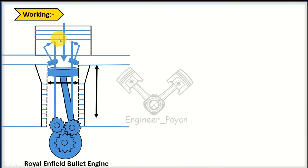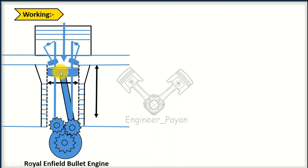First of all, we have a V-shaped bullet engine structure. We have an air-fuel mixer and a combustion chamber. This is the stroke. If you compare it to the engine, we have a stroke in the bullet. If you compare it to the air-fuel mixer, we have an air-fuel mixture entering.